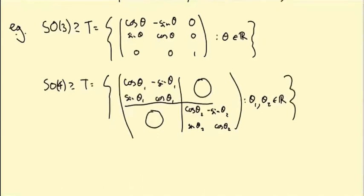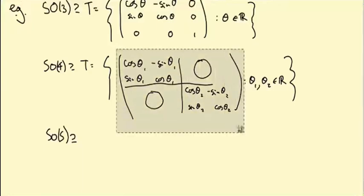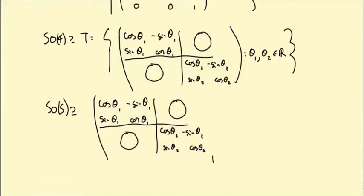What about SO(5)? Well, it turns out you can't get any bigger, so you're just going to use this matrix and then stick a one down in the bottom right, and zeros everywhere else. So you still have a two-dimensional maximal torus inside SO(5).